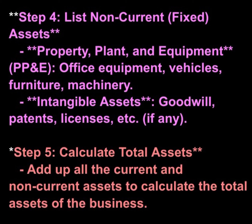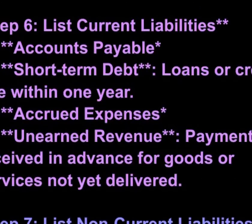The owner's investment — equity of the sole proprietor. Subtract any withdrawals made by the owner for personal use. Step 10: Balance the sheet. Ensure that total assets equal total liabilities plus equity. Final review and adjustments: cross-check the values for accuracy and ensure the balance sheet balances.